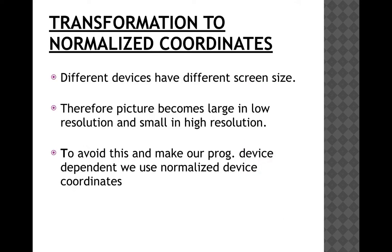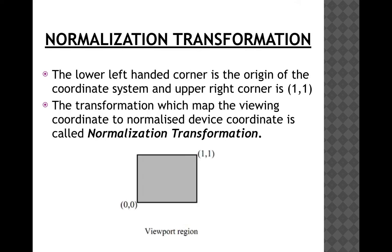The reason we convert coordinates to normalized coordinates is that different display devices may have different screen sizes. The size of the screen in pixels increases as the resolution increases. So when a picture is defined in pixel values, it will appear large on a low-resolution screen and small on a high-resolution screen. To avoid this and to make a program device-independent, we define picture coordinates in units other than pixels — these device-independent units are called normalized device coordinates.